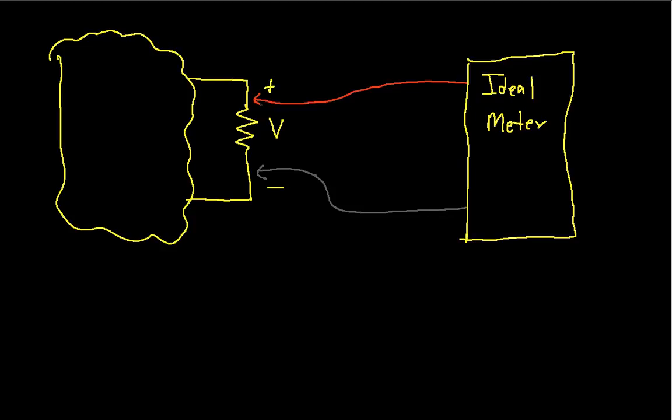So in real life, every real meter can be modeled by an ideal meter that also has an input impedance, what here I've called RM. It has an input impedance between the two terminals, at least when you're measuring voltages.